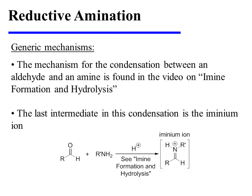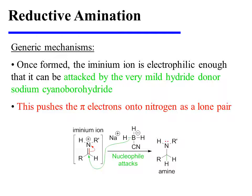As we start to examine the mechanism for the transformation, the first part — the condensation between an aldehyde and an amine — is found in the video on amine formation and hydrolysis. The last intermediate in this condensation is the aminium ion. Once formed, the aminium ion is electrophilic enough that it can be attacked by the very mild hydride donor, sodium cyanoborohydride, and this pushes the pi electrons onto nitrogen as a lone pair, providing the amine as the product.